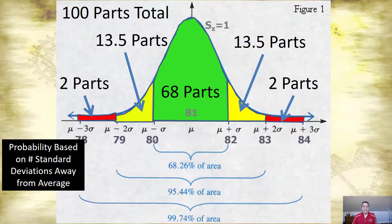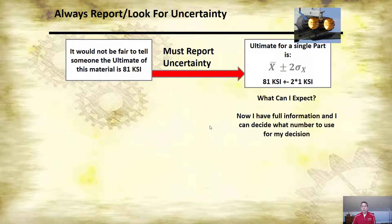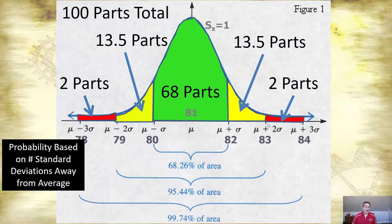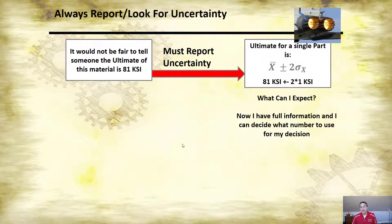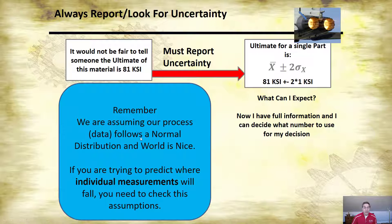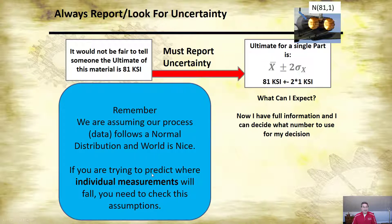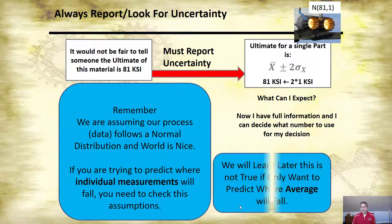When we report a number, it's not fair to just give the average. Without giving some idea of the uncertainty, we're not giving that person full information, because they are going to get parts on either side. We're assuming our process is normal with an average and a standard deviation. If you're trying to predict where individual measurements will fall, you need to verify that it really is normal. That's not true with averages — if you're just worried about where the average is going to be, the normality assumption isn't as important.